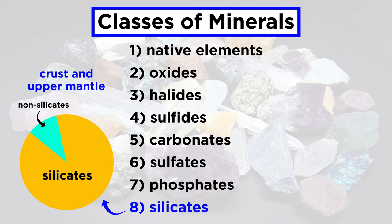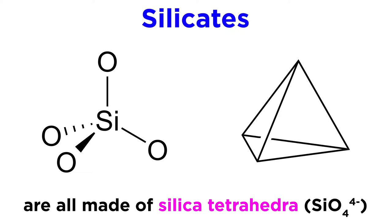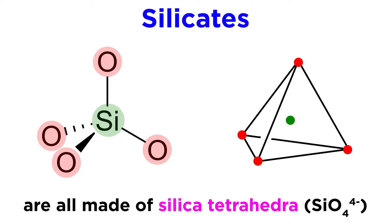All silicates are made of the same building block: the silica tetrahedron, which is simply a silicate, or SiO4 4- anion. The structure of the silica tetrahedra is a central silicon atom that is bonded to four oxygen atoms. You can think of it as a pyramid with a silicon atom in the center and an oxygen at each corner.